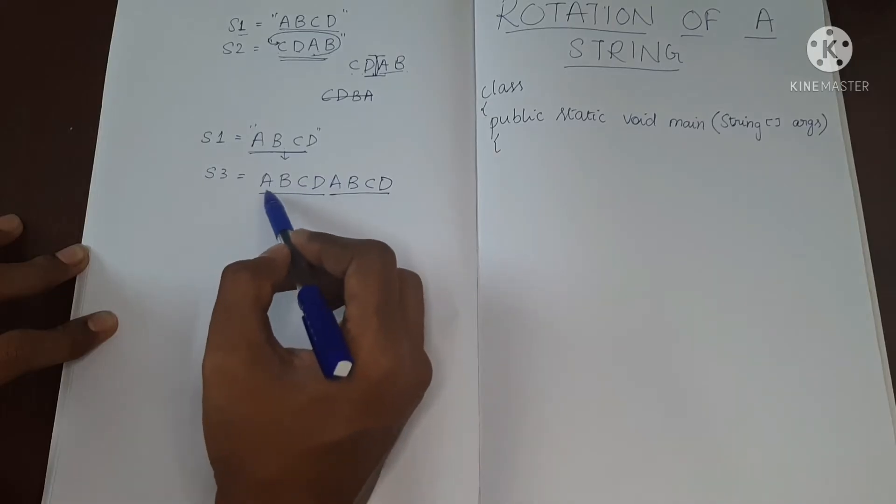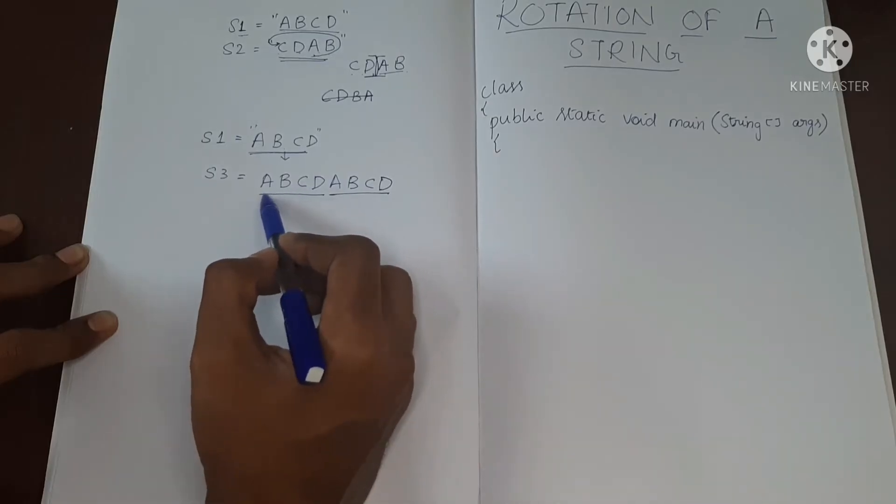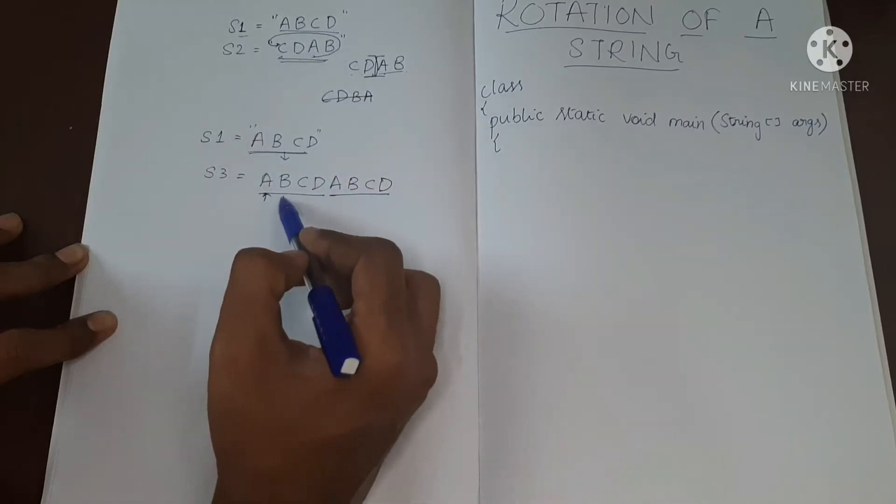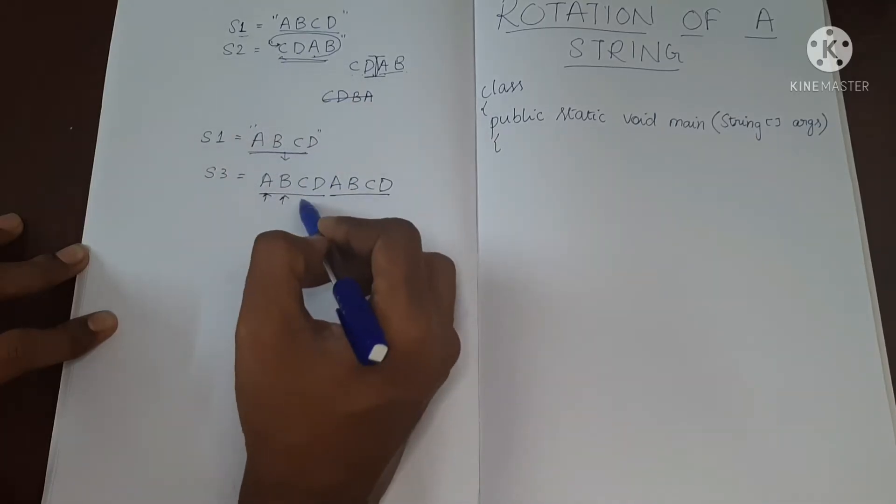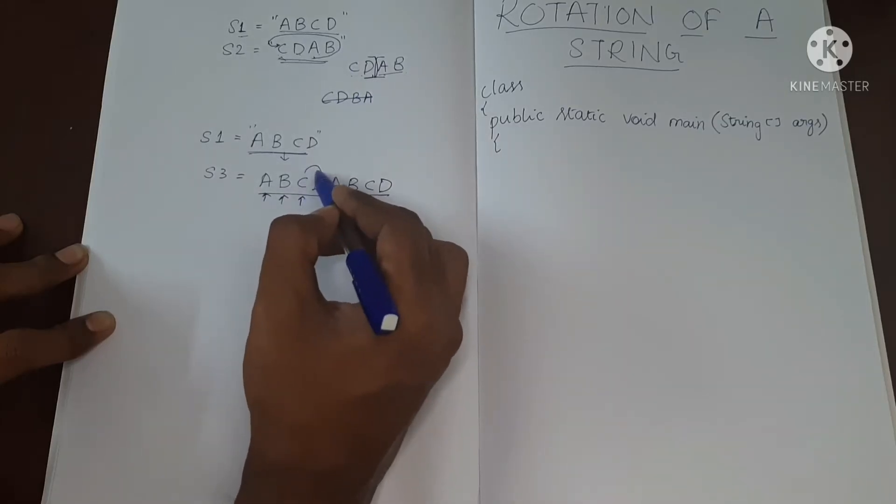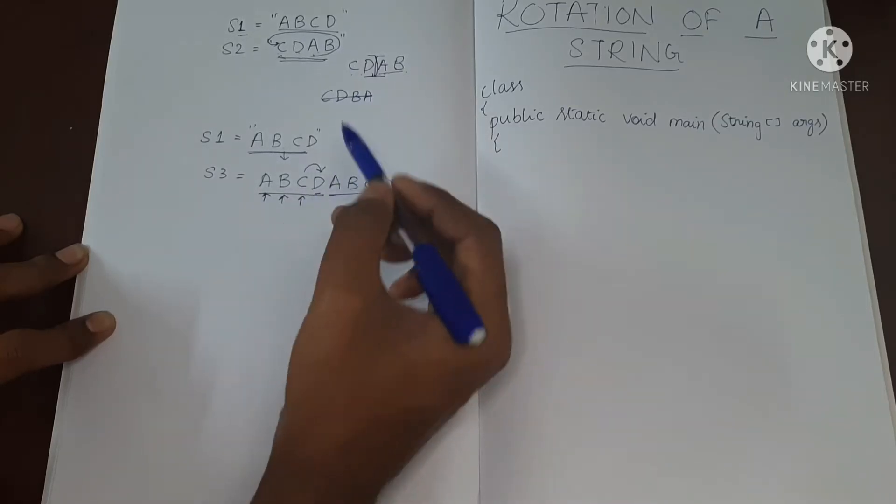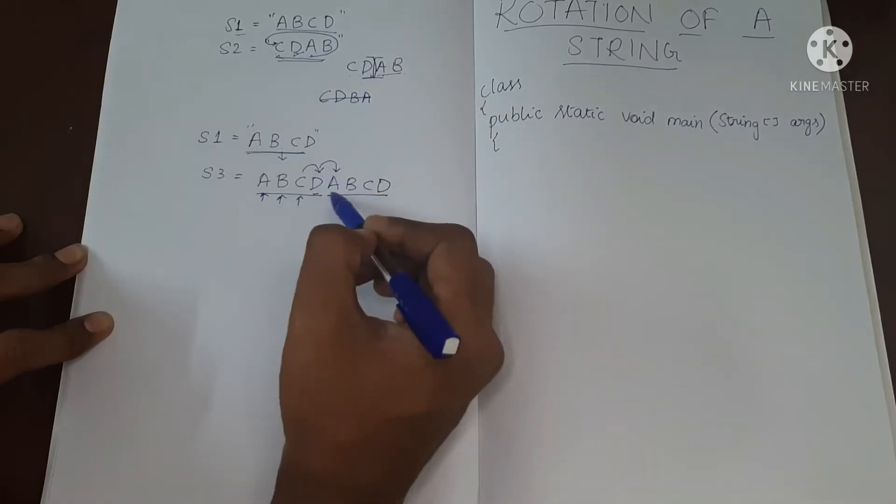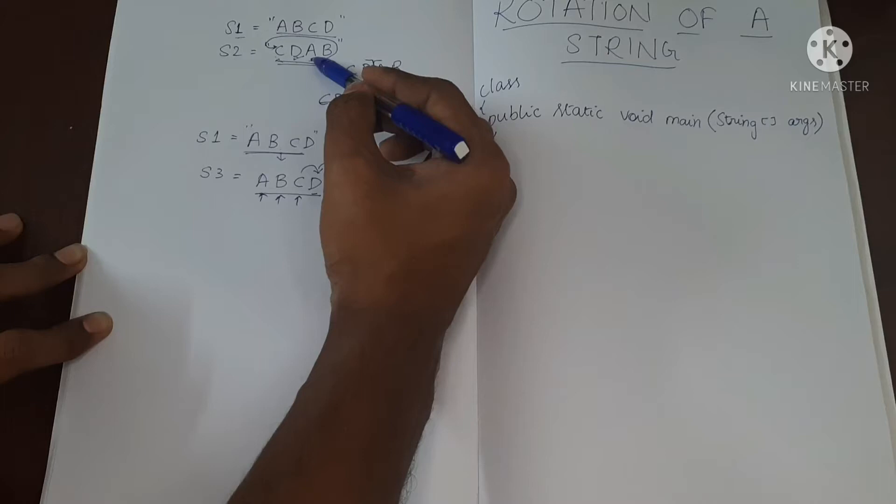Is it equal to C? No. Is it same as C? No. This is same as C. So now let's check for the next element. This is D, and we have a match over here. Now we move on to the next element. This is A, and we can see over here, it's A.